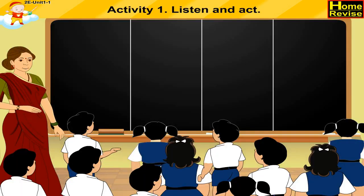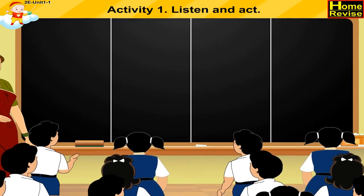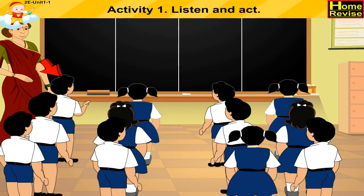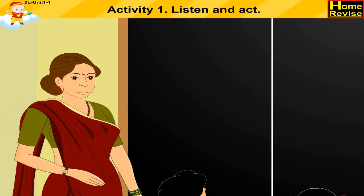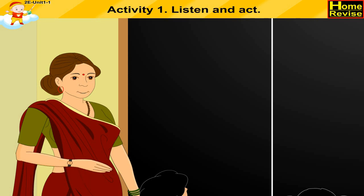Stand in lines. Have you done that? Good. Now, look at the columns on the blackboard. Each column belongs to one line. Go to the blackboard and write your name in your column. Every child in every line will write his or her name. Okay?